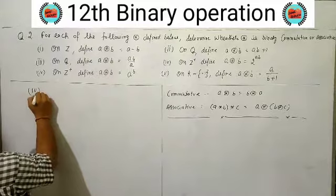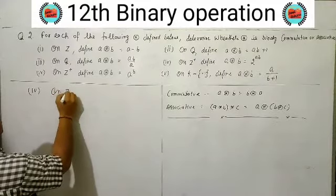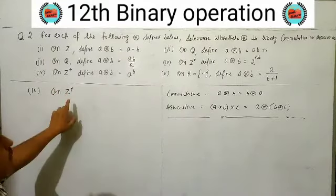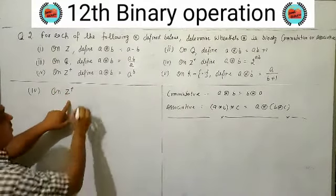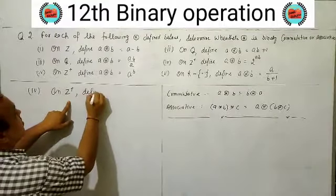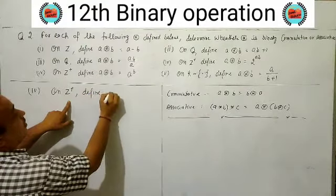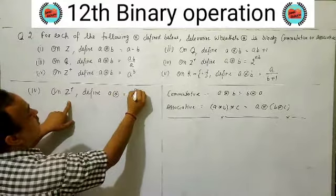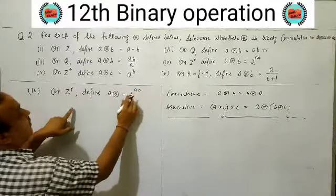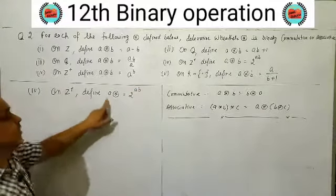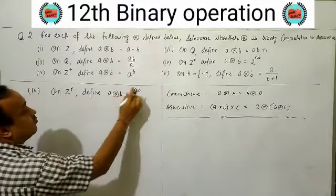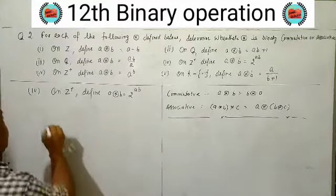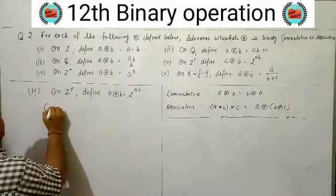Fourth part: on Z+ (positive integers), operation defined as a★b = 2^(AB), meaning 2 raised to the power of the product of both elements. First we check commutative.